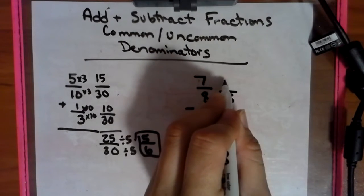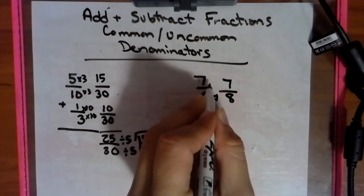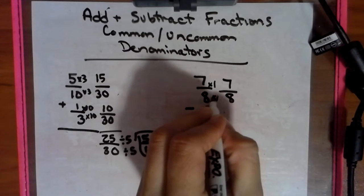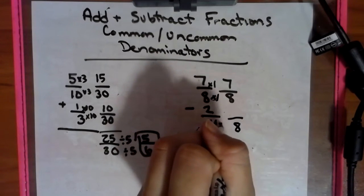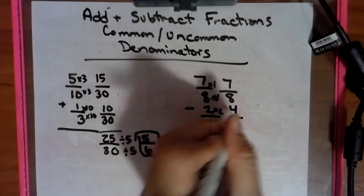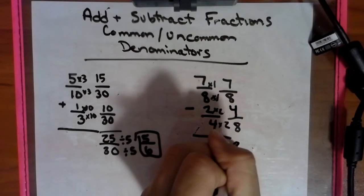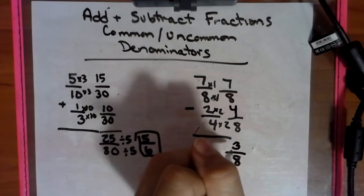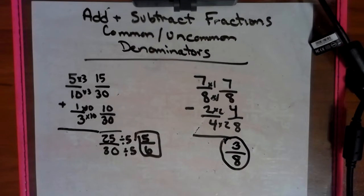8 did not change, so we just bring this over. It's like multiplying by a 1. And 4 goes to 8 by timesing by 2 times the numerator by 2. We get 4. We've got to subtract. So 7 subtract 4 gives us 3 eighths. And this is already simplified.